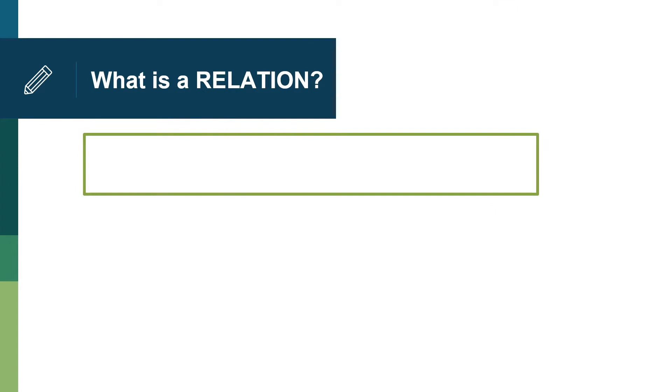Let us now define the word relation. So what is a relation? A relation in mathematics is a set of ordered pairs. If we are going to look back or review your knowledge about an ordered pair, I have here an example. This is (5, -2).